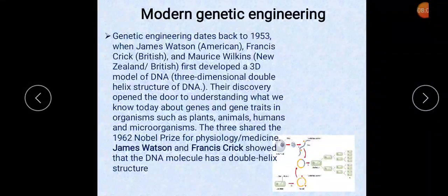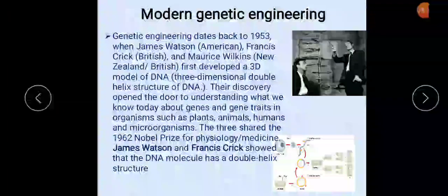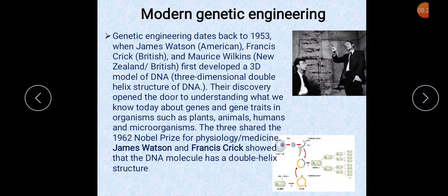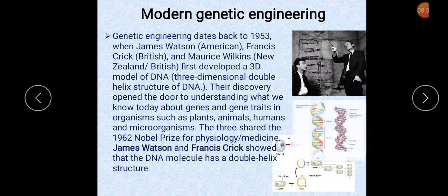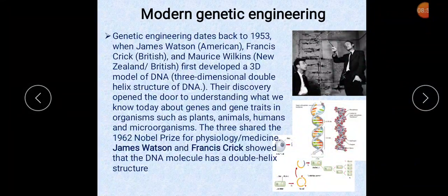Now, some facts and discoveries in modern genetic engineering. Genetic engineering dates back to 1953 when James Watson, Francis Crick, and Maurice Wilkins first developed a 3D model of DNA — the three-dimensional double helix structure. Their discovery opened the door to understanding genes and gene traits in organisms such as plants, animals, humans, and microorganisms.